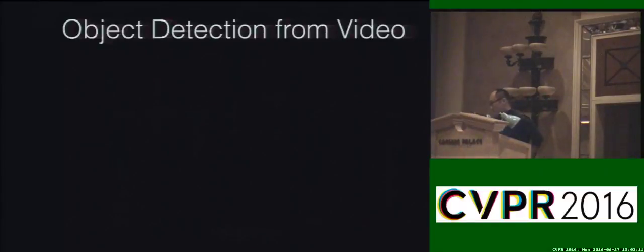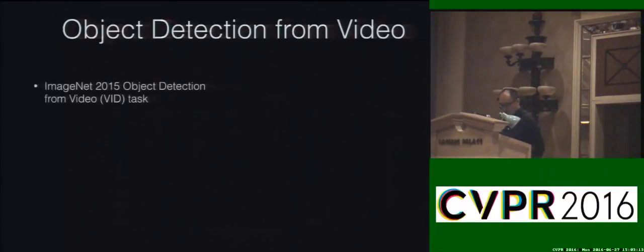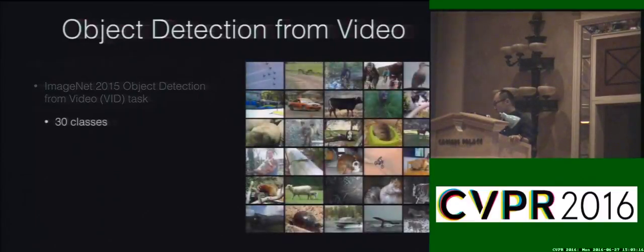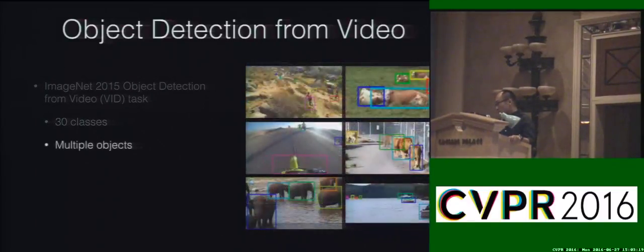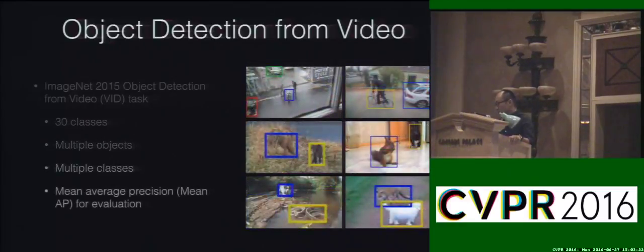Hi, I'm Kankai from CUHK, and I'm here to present our work on object detection from video. This task was introduced in last year's ImageNet detection challenge. There are 30 classes from the video frames, including multiple objects and multiple classes, and MAP is used for the evaluation.